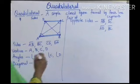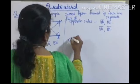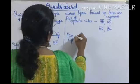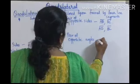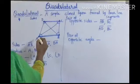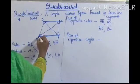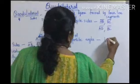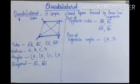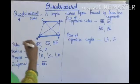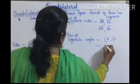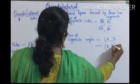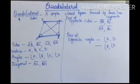Next, coming to the pair of opposite angles. Angle A and angle C are opposite angles — that is one pair. And angle B and angle D are opposite — that is another pair. So here also you are going to get two pairs of opposite angles.